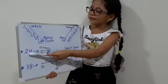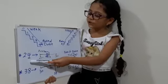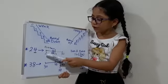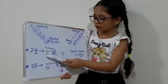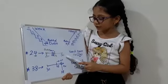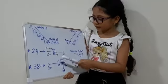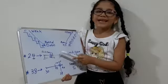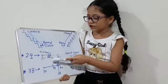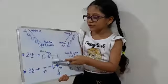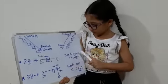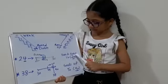Example: 24 is between 20 and 30. It is less than 25, so it is rounded down to 20.